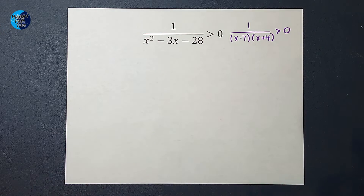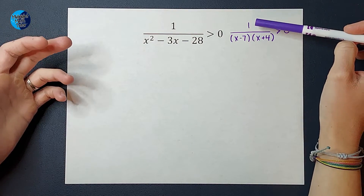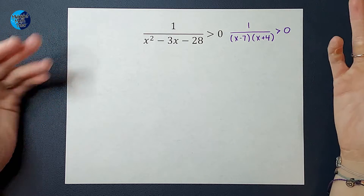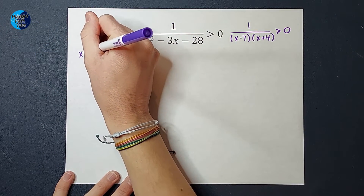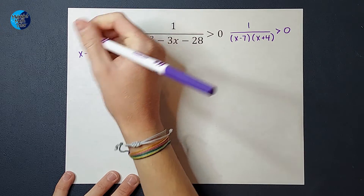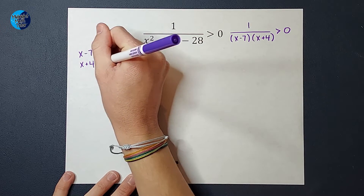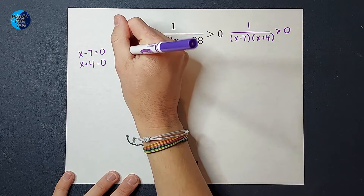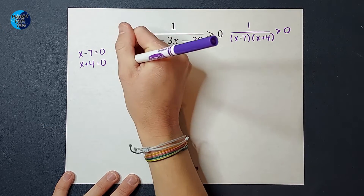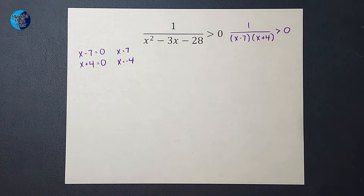From here, I am going to take each of these and set them equal to zero. I could set one equal to zero, but that's not true, so we're not going to do that. I'm going to set X minus seven equal to zero and X plus four equal to zero. So then I'm going to solve. I'd add seven to both sides here, get X equals seven, subtract four from both sides, and get X equals negative four.